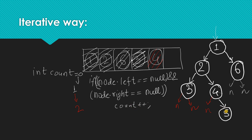Since four's right child is not null, we don't increment the count. We push the right child of four into the queue. Then we pop node five and check if its left and right children are null — they are — so we increment the count. Now the queue is empty and our answer is three.